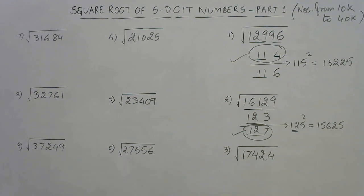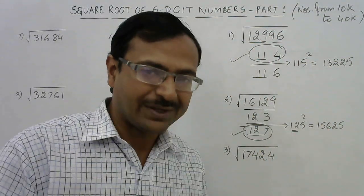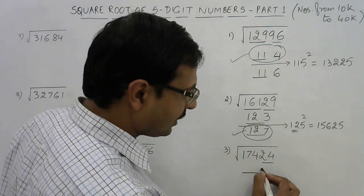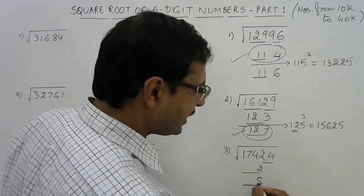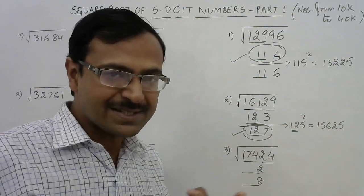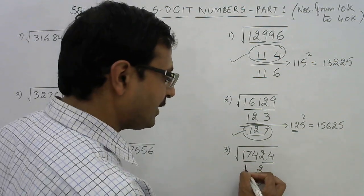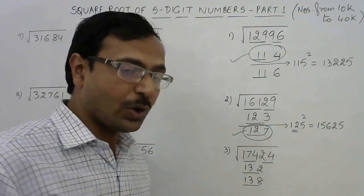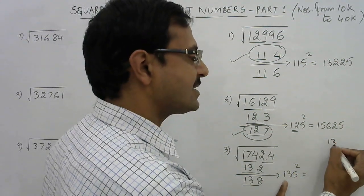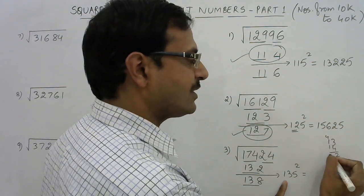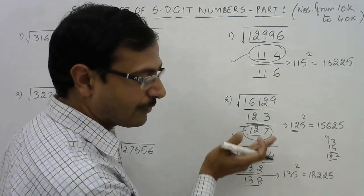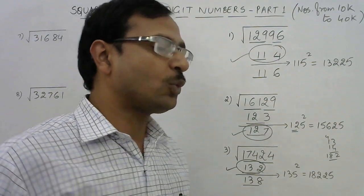Let's see the third example. The number ends with 4, so our answer will either end with 2 — because 2 times 2 is 4 — or end with 8 — because 8 times 8 is 64 ending with 4. The balance number is 174. 13 squared is 169, but 14 squared is more than 174, so 13 is the remaining part. Our answer is either 132 or 138. Take the intermediate number 135. Multiply 13 by its successor 14: 13 times 14 is 182, followed by 25, giving 18225. The original number is smaller than this, so our answer is the smaller one — 132.